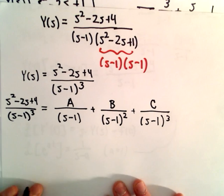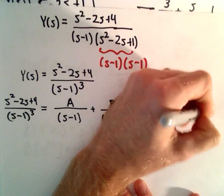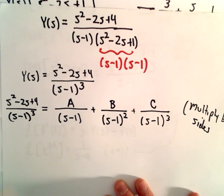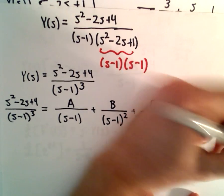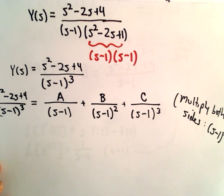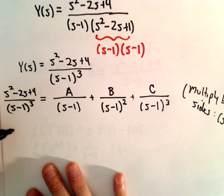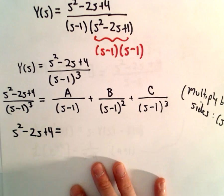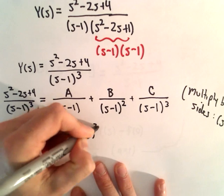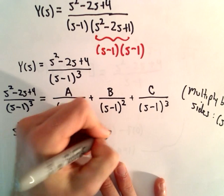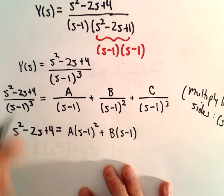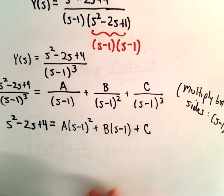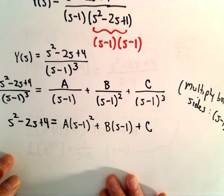I'm going to multiply both sides by whatever the denominator is on the left — s minus 1 to the third power. When we do that, we'll be left with s squared minus 2s plus 4 on the left side. The s minus 1 to the third will cancel out, and we'll have a times s minus 1 squared, plus b times s minus 1, plus c. Now we just equate coefficients because we're trying to solve for a, b, and c.